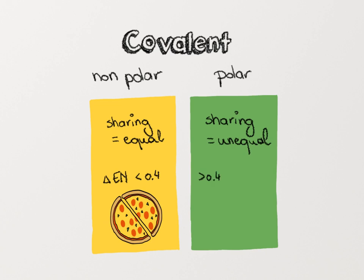On the other hand, if the difference in electronegativity is larger than 0.4, then the electrons are going to be shared unequally in the covalent bond. In this case, this covalent bond is then polar.